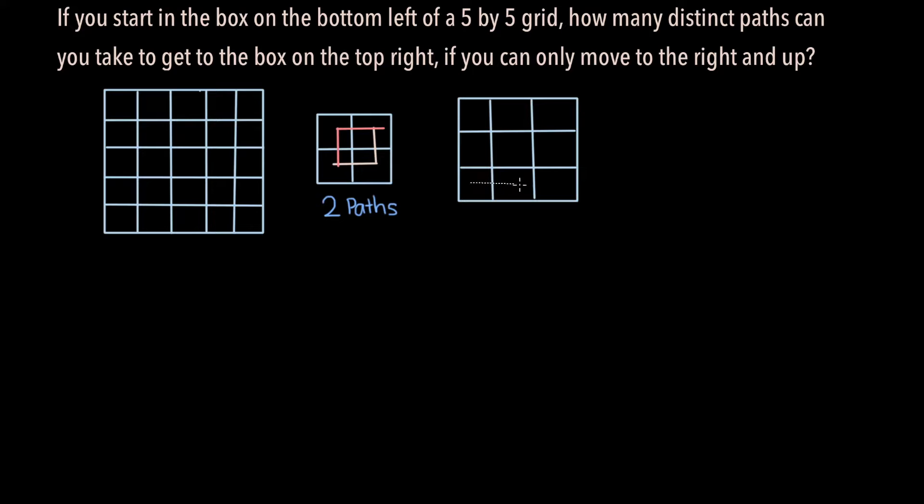You could go right twice and then up twice, or you could go right once, up twice, and then right once again, and so on. It turns out that there are six distinct paths for this 3x3 grid, each of which have drawn in a different color.